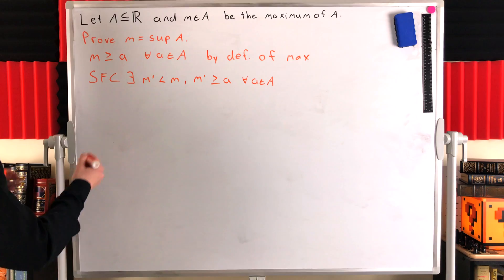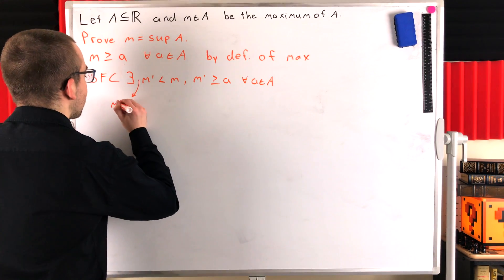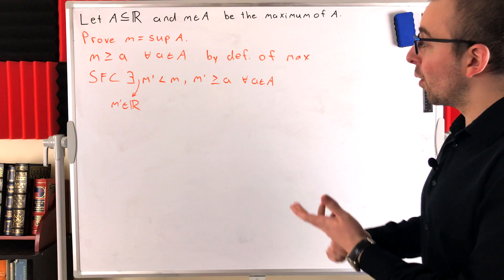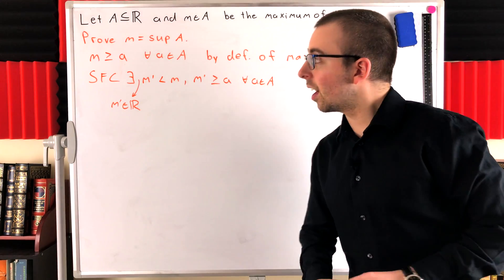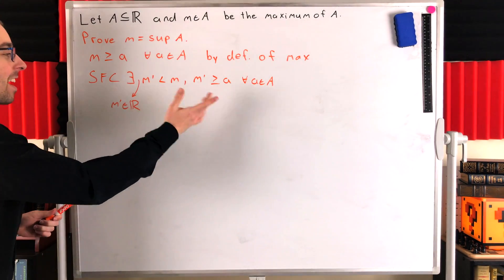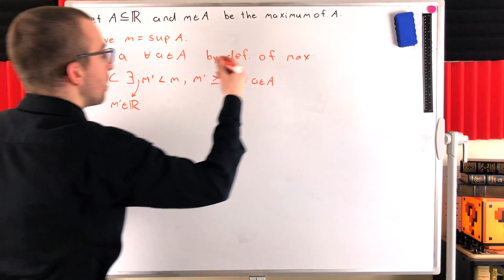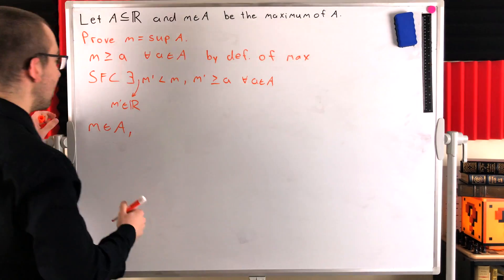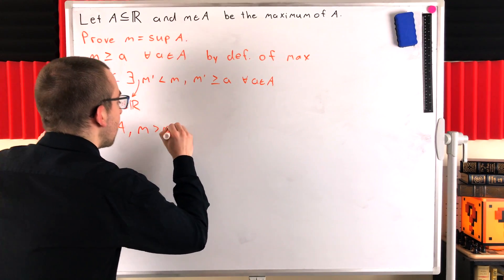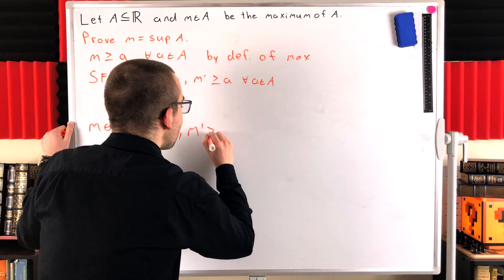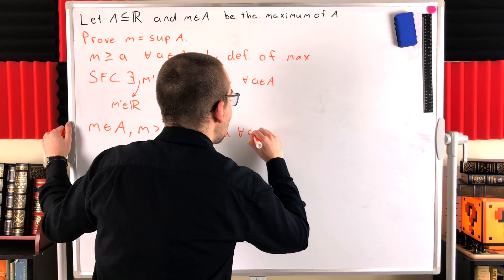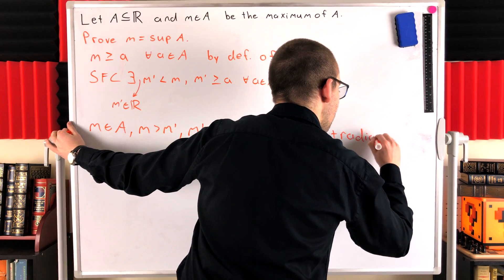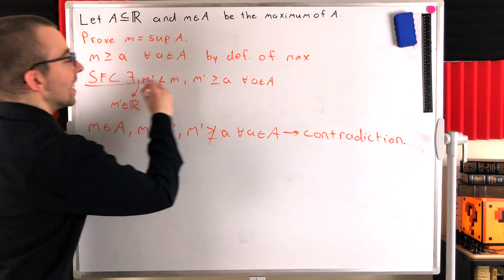So what's the contradiction? Well we suppose that M prime was greater than or equal to every element of big A, but we also suppose that it's less than M. That was our contradiction assumption. And by definition of the maximum of A, which is what M is, M is an element of A. The maximum of A has to be in A. And of course our contradiction assumption was that M is greater than M prime. So we see in fact M prime is not greater than or equal to a for every element little a in big A, and that's a contradiction.